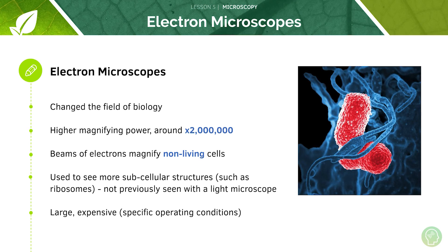However, electron microscopes do have drawbacks. Although they can magnify structures so much that we can see very small structures such as ribosomes within the cell, they are very large machines that are very expensive to run and require careful maintenance — that's why your school probably doesn't have one. Also, electron microscopes can only be used to view non-living cells, whereas light microscopes allow you to visualize real-time living cells.